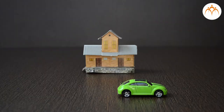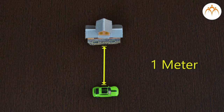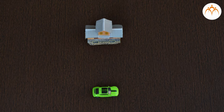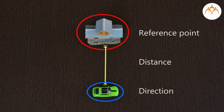Position is the measure of the car's location. We can say that the car's position is 1 meter in front of the house. You will notice that I used three things: first is this reference point — the house; second is the distance from the house; and third, the direction from that reference point — in front of.